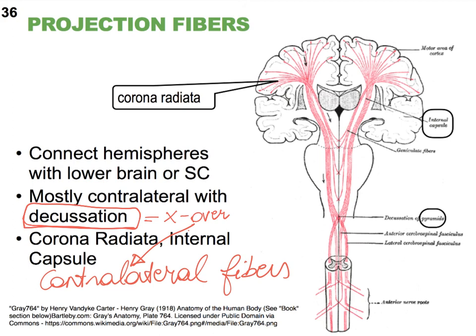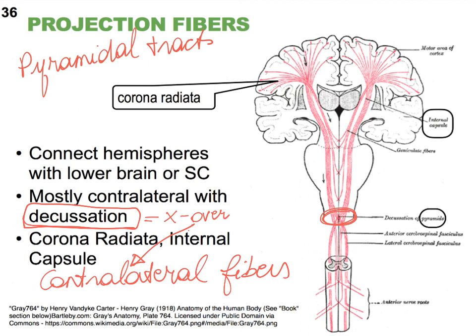One of the most important fiber tracts you need to know about is the pyramidal tracts, also called the pyramids. They are motor fibers that leave the CNS. What makes them important is that they cross over — they decussate — at a very high point, right at the junction of the brain with the spinal cord, specifically at the medulla oblongata, which is the most inferior portion of the brain.